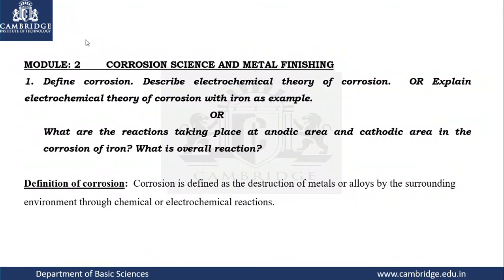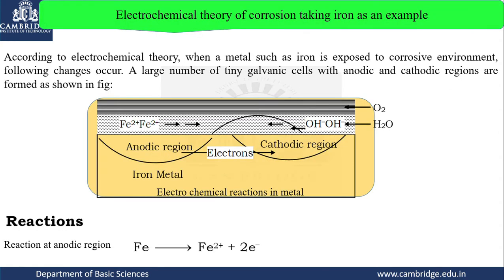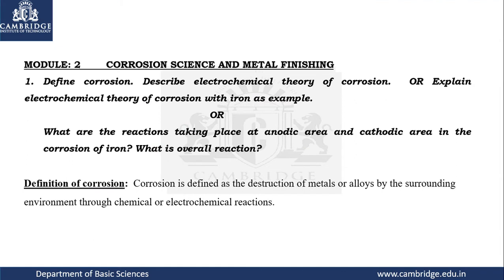Welcome to the tutorial classes of Module 2. Under this module we will be discussing 3 to 4 subtopics. The first question is the definition of corrosion and the electrochemical theory of corrosion. This is a most probable exam question — it has been asked several times, and if you learn this, the benefit is it is easy to get 6 marks.